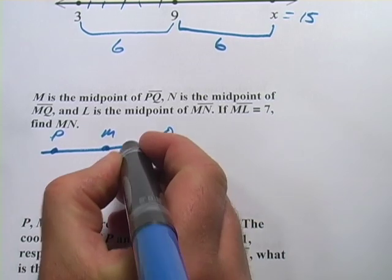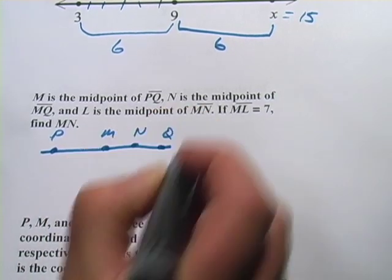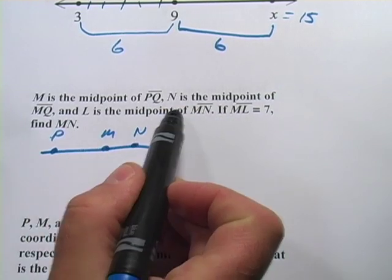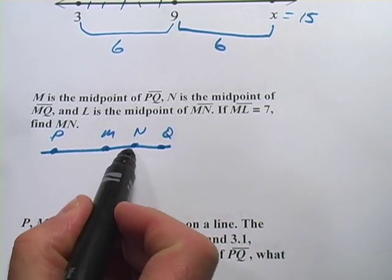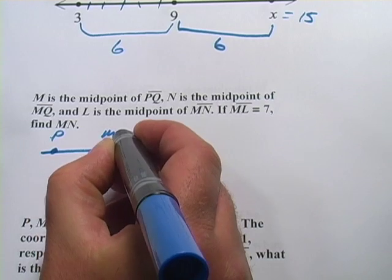Then it says N is the midpoint of MQ. Here's MQ, so N would be the middle of that. And then it says L is the midpoint of MN. Here's MN, so L would be right there.